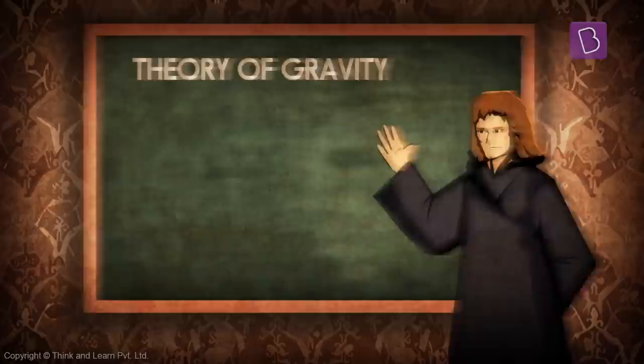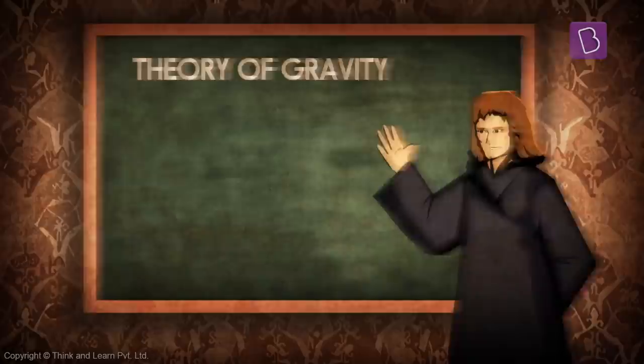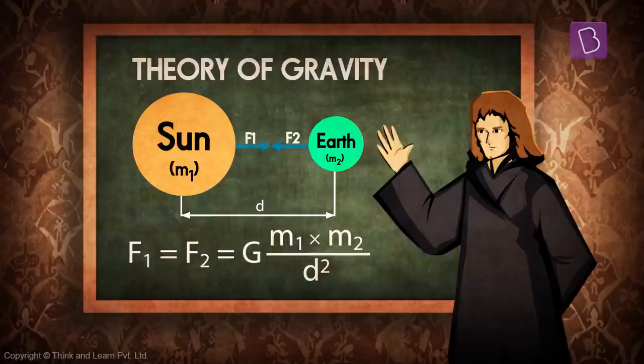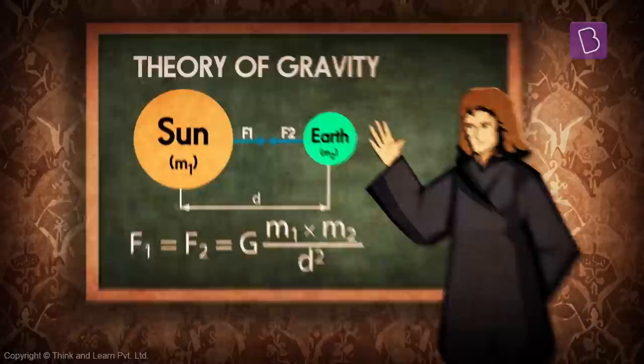However, it was Newton who put all this knowledge into a universal theory that could explain gravity in a systematic and mathematical way. Newton got credit for the discovery, and a peeved Hooke held a grudge against Newton for the rest of his life. Anyway, coming back to our discussion about cells.